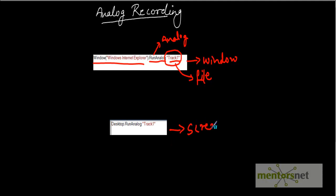The only difference is that when recording relative to the whole screen, the desktop gets added to the statement. When recording relative to the window, the window title appears. But in both cases, QuickTest adds the RunAnalog statement that calls the recorded analog file - the track file - which gets saved into the QTP test and is referenced with the RunAnalog statement.